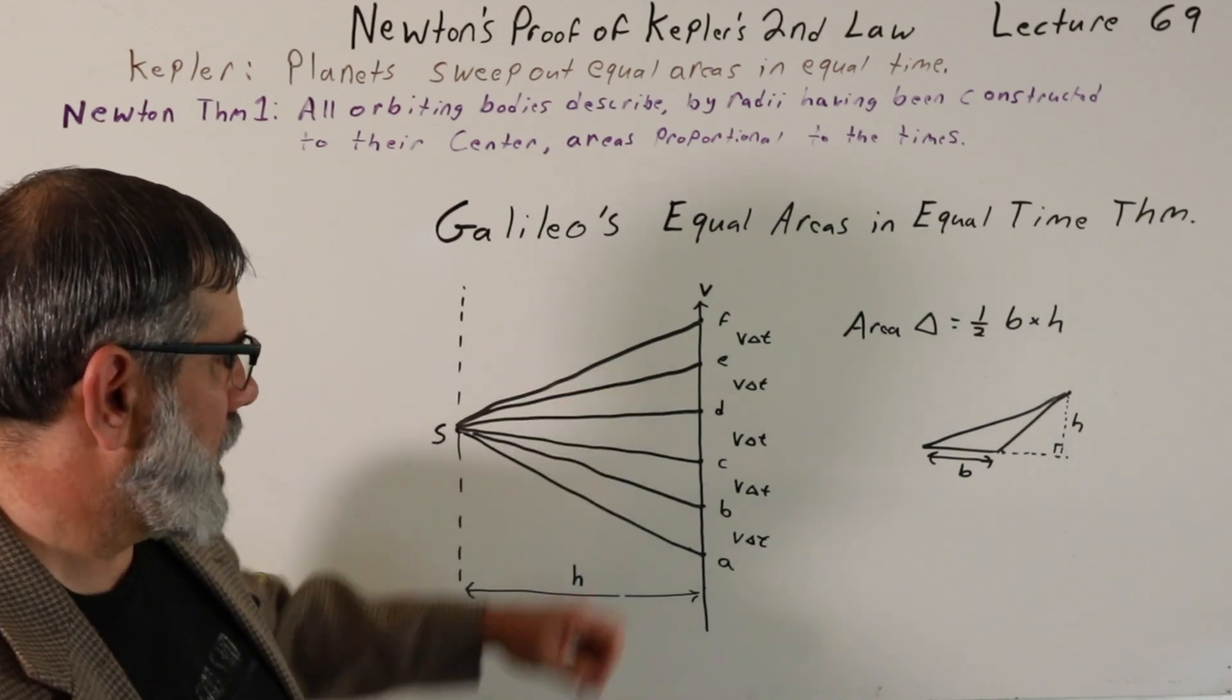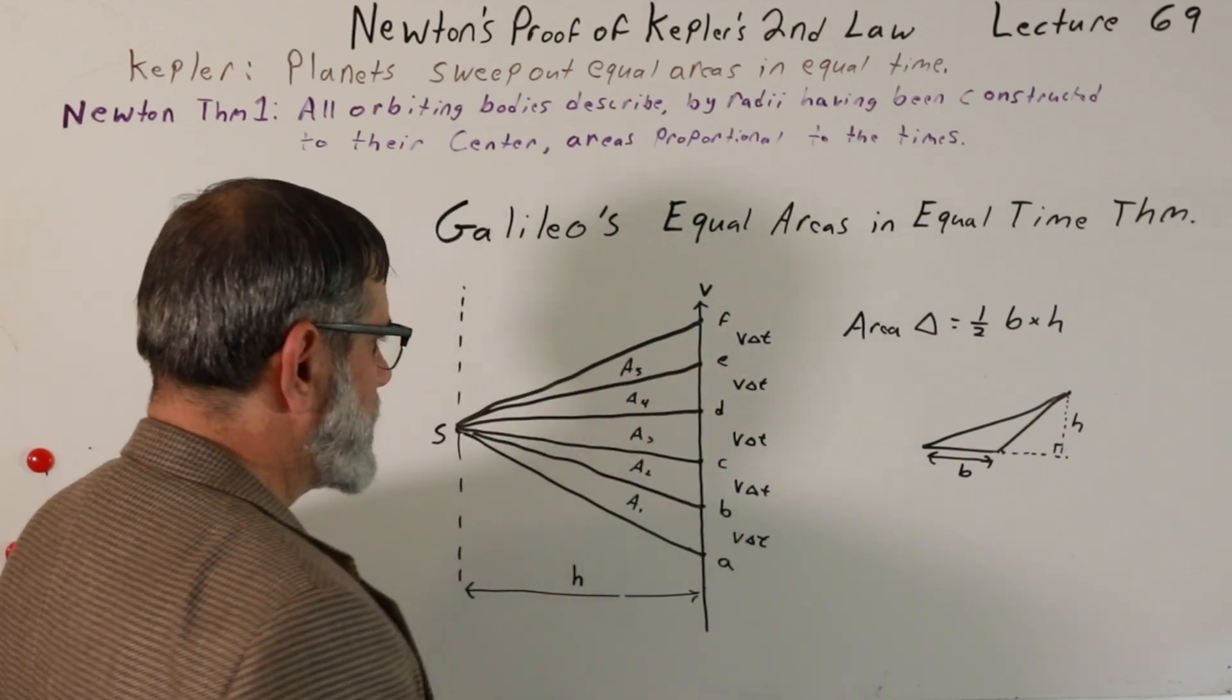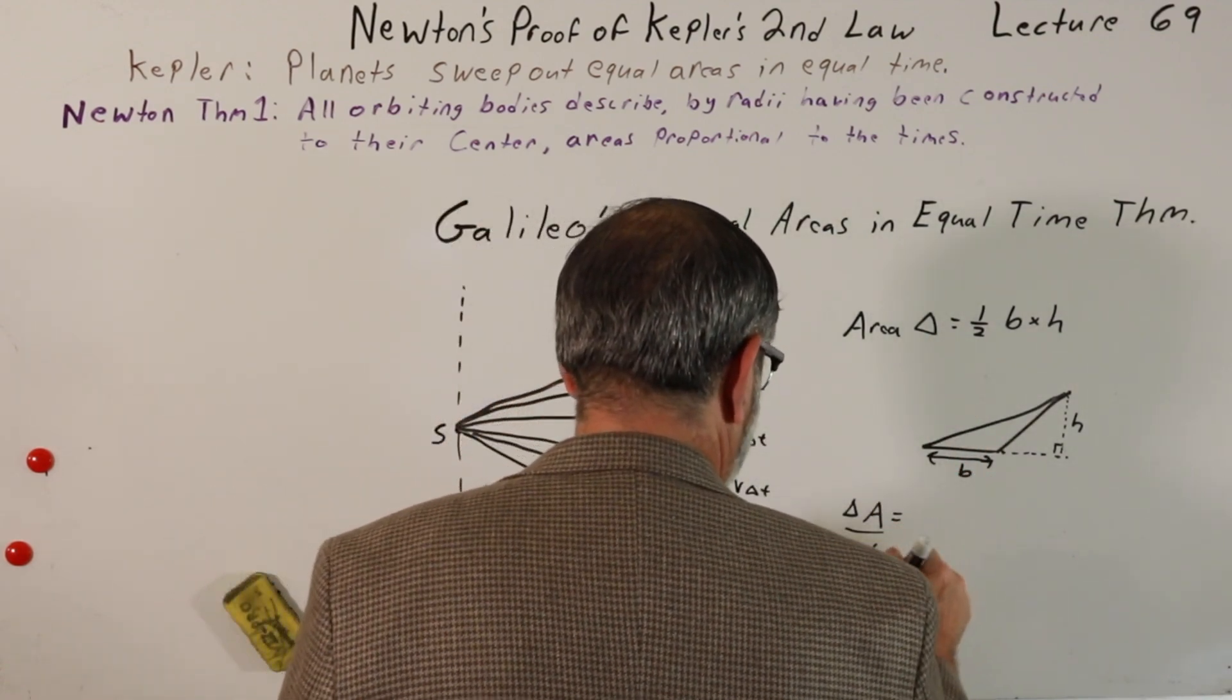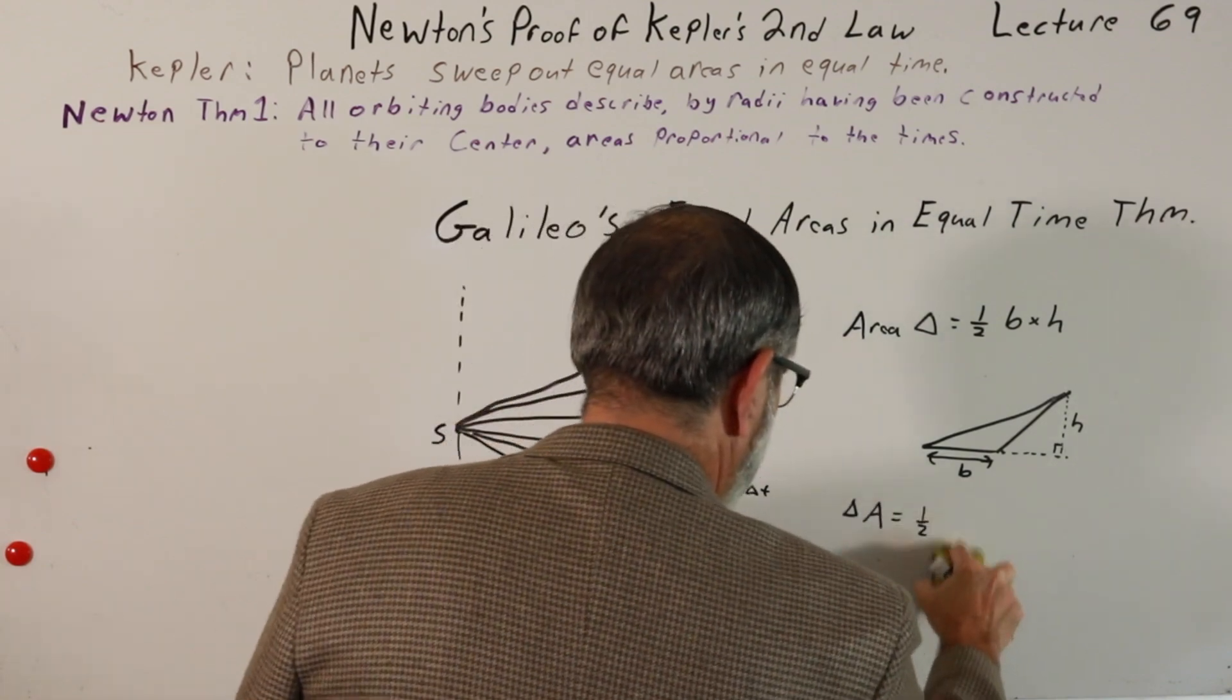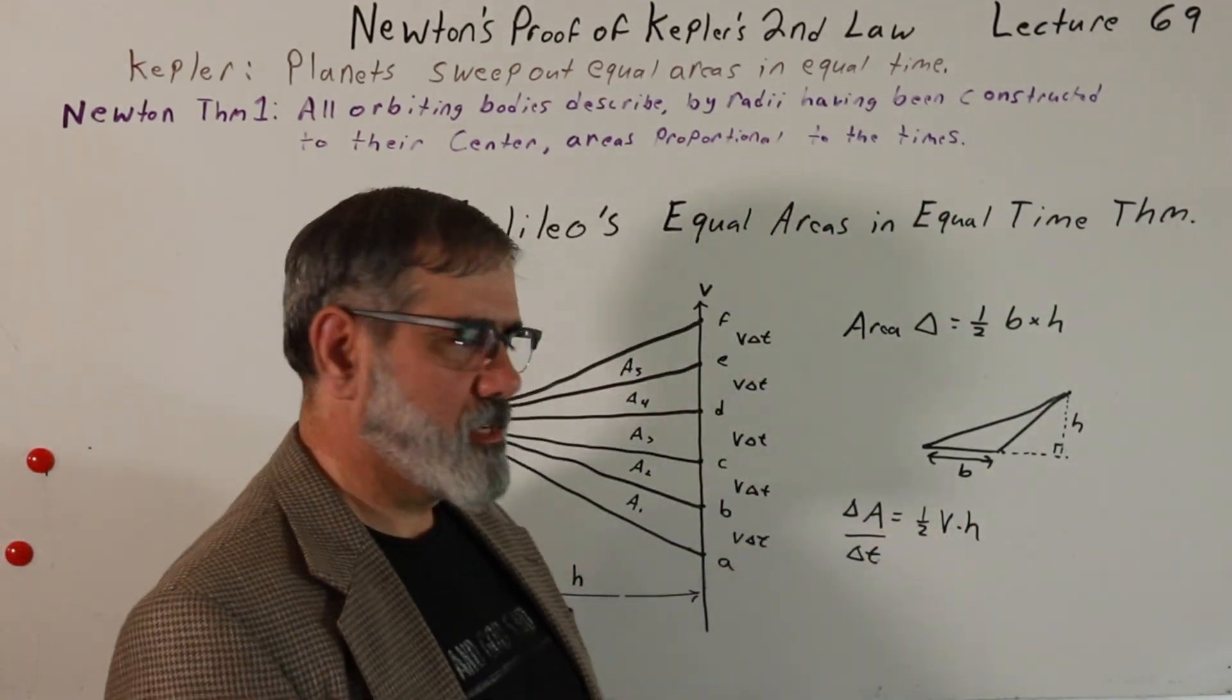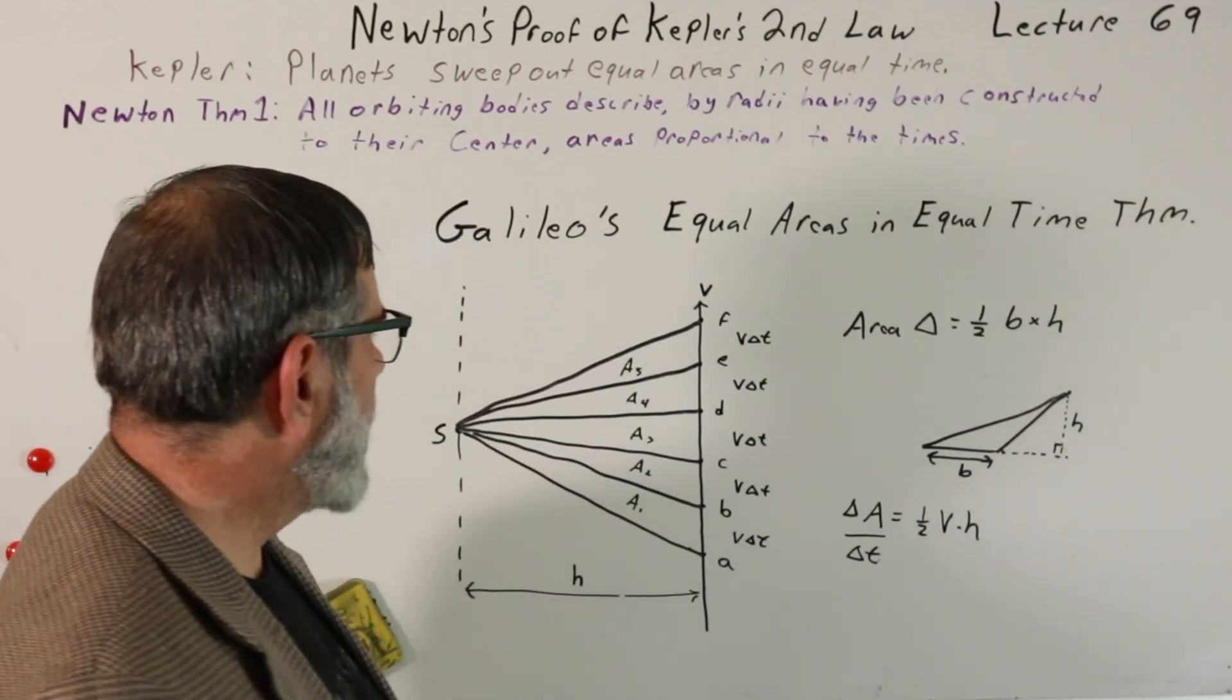So if we look at the areas of each of these individual triangles, they each have the same base, V delta T, but they also have exactly the same altitude, H. And so if we call this A1 and this A2 and this A3, A4 and A5, then we see that they're all equal to each other. This is the equal areas and equal time theorem. So the change in area is equal to one-half the base, which is V delta T, times the height H. Divide out delta T, that leaves me with one-half V times H. V is constant by definition, we said we're considering a constant velocity. H is always a constant as well. So you can see that delta A over delta T is a constant. So equal area and equal time. That's Galileo's equal area and equal time theorem.